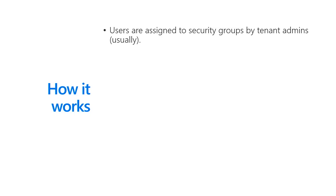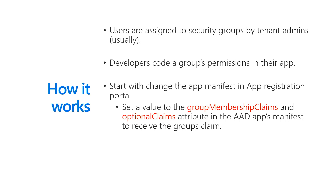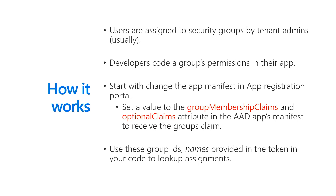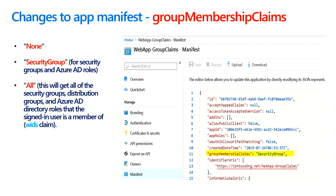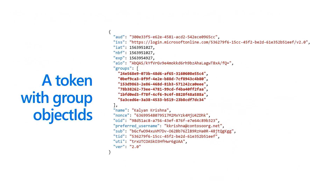So how does it work? A user can be assigned to security groups by an admin. Developers can code group permissions in their apps. To get those group IDs easily, we can pass along those group IDs as a claim in your tokens. You have to do this by changing the app manifest, and once you do that, the group IDs will be part of your token. You go to group membership claims and specify that you want the security group. You can have none, or you can also have 'all' — which means you get not only security groups but also distribution groups and Azure AD directory roles.